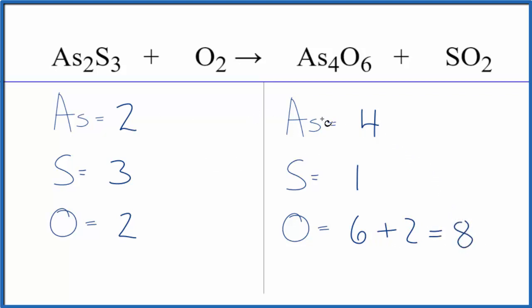It seems to make sense probably just to balance this arsenic first, see what happens with that. If we put a two here, two times two, that would give us four, those would be balanced. Then three times the two here, that would give us six.